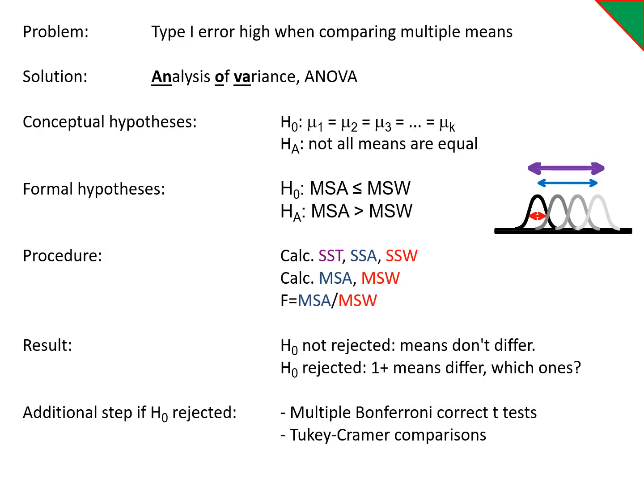So to recap, we have this problem that the type 1 error rate gets really high if we're comparing multiple means. We solve this problem with the ANOVA. Conceptually, we're comparing the means. Formally, we're comparing variances. Our procedure: we calculate sums of squares, mean sums, and do an f-test.